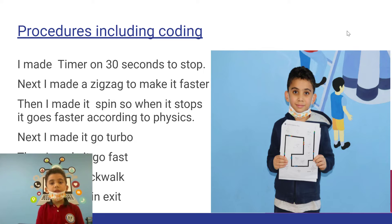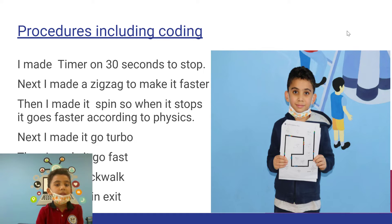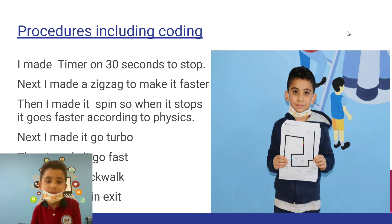Procedures including coding: I made a timer set to 30 seconds to stop. Next, I made a zigzag to make it faster. Then, I made a splinter when it stopped — it goes faster according to physics.